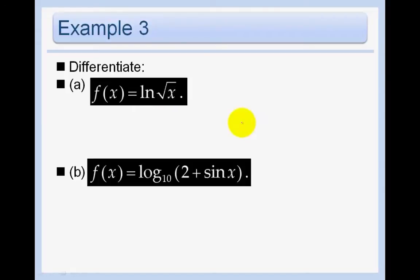Example 3, let's just re-express this as ln x to the 1 half power. Here's our baby. The derivative is just going to be 1 over x to the 1 half times the derivative of the baby. That's it. You can leave your answer just like that.